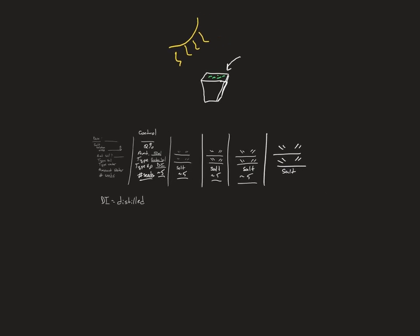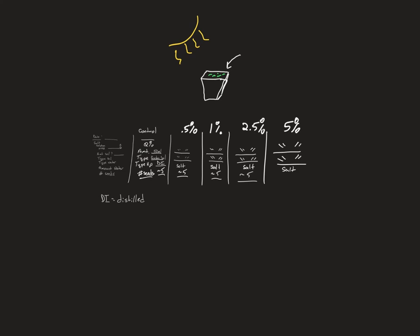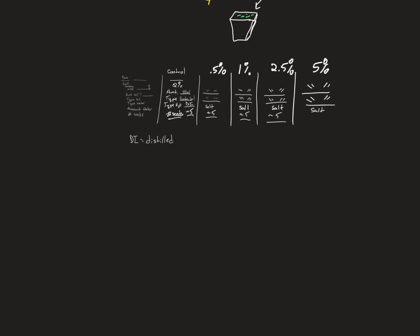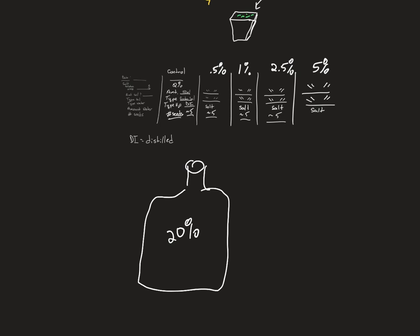Each pot will have a different concentration: 0.5%, 1%, 2.5%, and 5% solution. Each will have a different bottle. We have a big jug with really concentrated salt — about 20% — and from there we'll make the five smaller bottles.